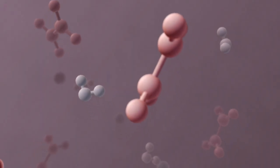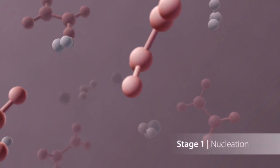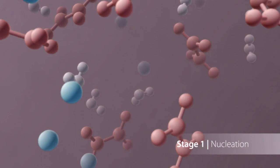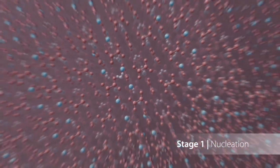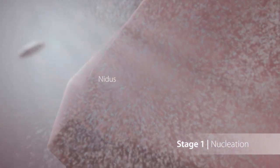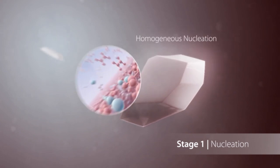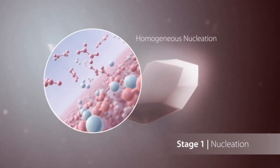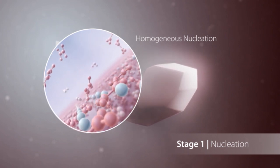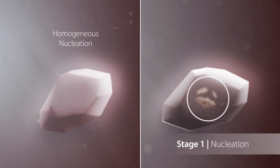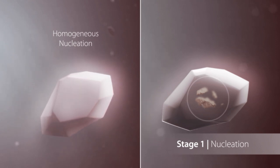How is a stone formed? The first step is nucleation. Ions such as calcium and oxalate that have been filtered into the urine by the kidney spontaneously join together to form a solid crystal nidus. This is called nucleation. There are two kinds: in homogeneous nucleation, crystals form around a nucleus with the same composition. In heterogeneous nucleation, crystals of a different composition form around the nucleus, and organic materials such as cell debris may be deposited between the crystals as a matrix.